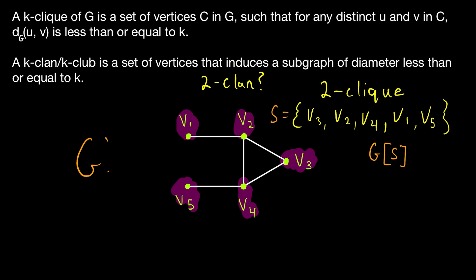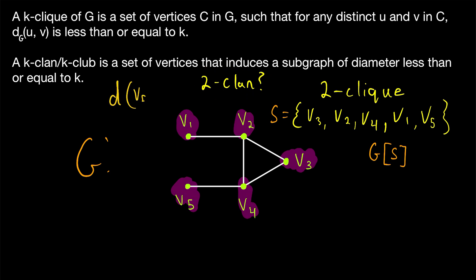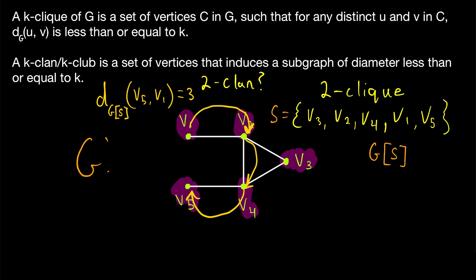Now we see how this set of vertices fails that restriction. Since we're looking at the induced subgraph, we no longer have that vertex V6 that allows us to travel from V1 to V5 in at most two steps. For a two-clan, we are interested in the distance between V5 and V1 in the induced subgraph. So in the subscript of D we put the graph we're taking the distance in — the subgraph of G induced by the set of vertices S. The distance between V5 and V1 in that graph is now three: we go from V1 to V2, from V2 to V4, from V4 to V5. Since the distance between these vertices in the induced subgraph is greater than two, it is not a two-clan.